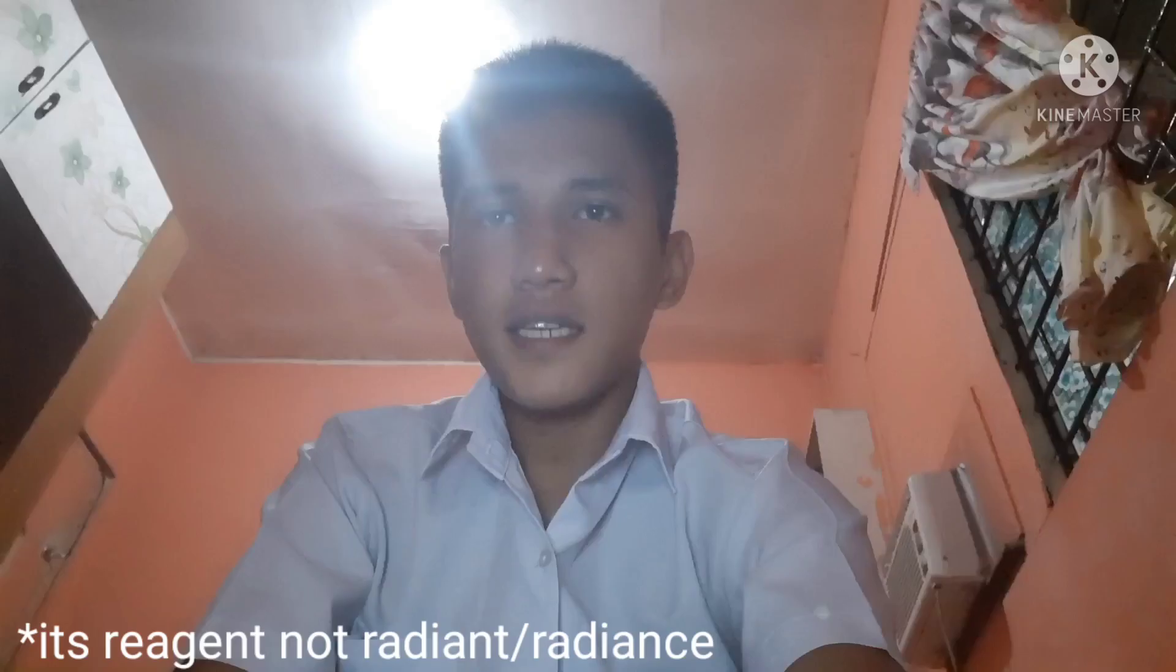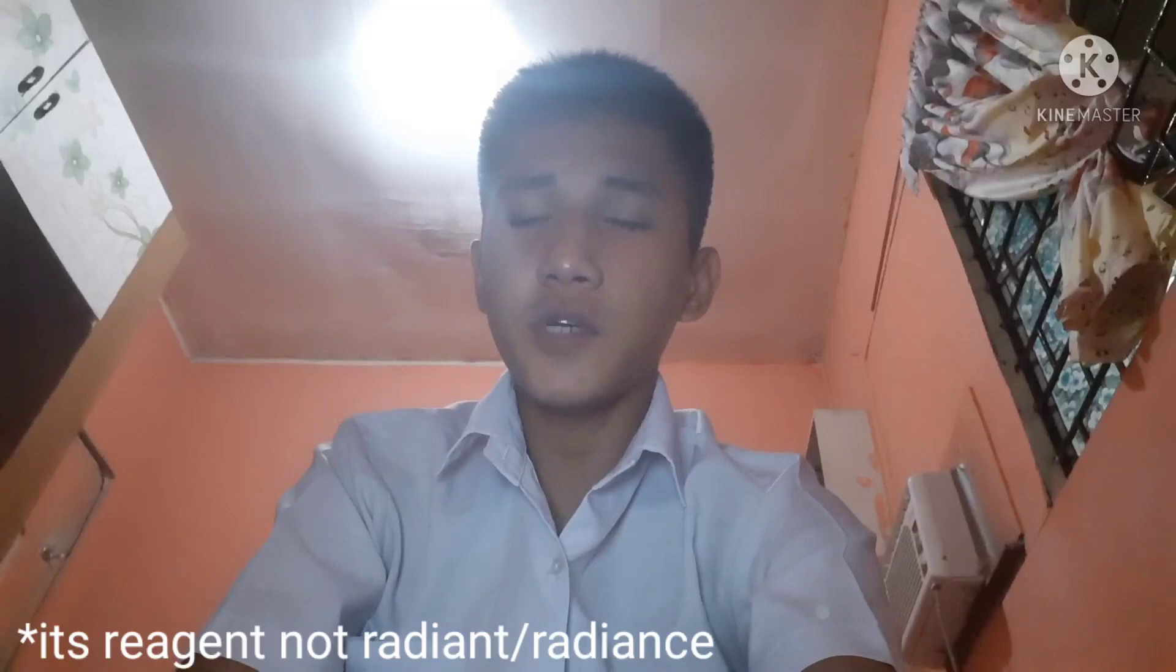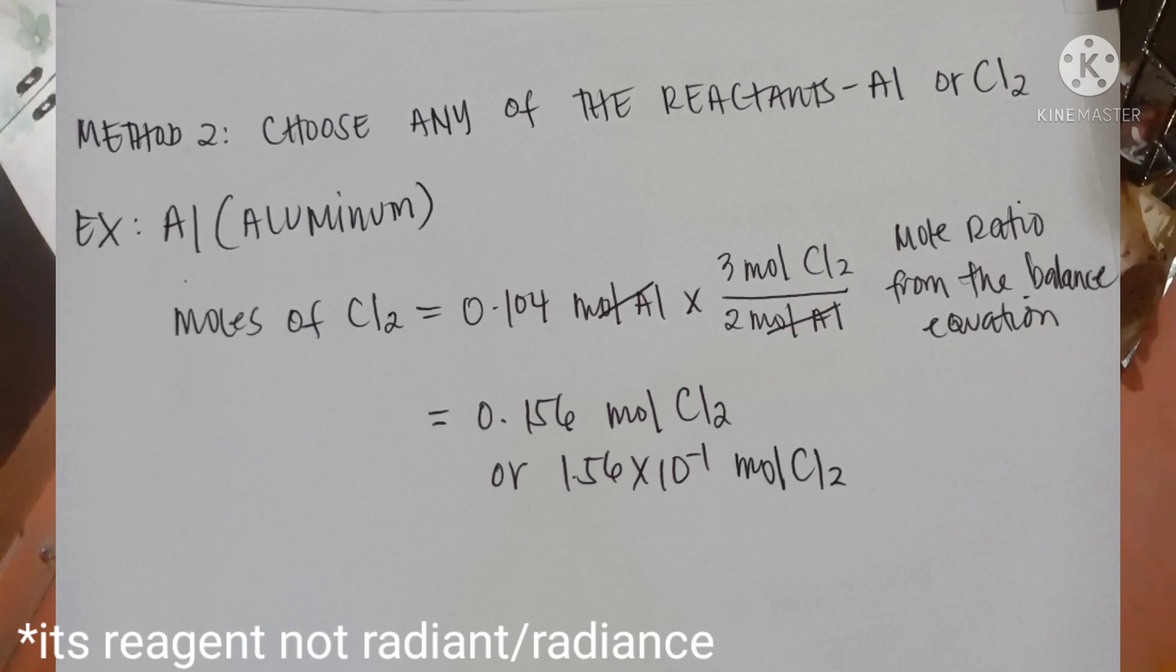In method 2 naman, we can choose any of the reactants. In our example, we can choose an aluminum or chlorine gas. Remember, whatever we chose, we always pretended it is the limiting reagent. And then, let's calculate the moles of our pretending limiting reagent. So in our example, kunwari, our aluminum is limiting reagent and we'll calculate the required amount of chlorine gas. So nandito na ang computation.